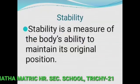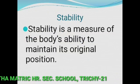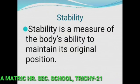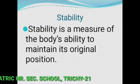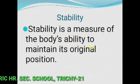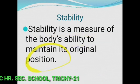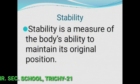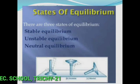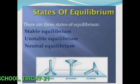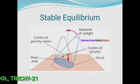The next topic is stability. Stability is a measure of the body's ability to maintain its original position. There are three types of stability: stable equilibrium, unstable equilibrium, and neutral equilibrium. Let us demonstrate them by taking a frustum.